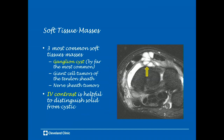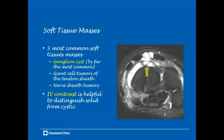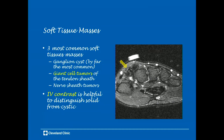Another common indication for wrist MRI is to identify and characterize soft tissue masses. The most common soft tissue masses in the wrist are ganglion cysts, and giant cell tumors and nerve sheath tumors. Ganglion cysts are by far the most common, with characteristic locations such as the dorsal wrist near the scapholunate interval, and are cyst-like with high signal. Giant cell tumors, on the other hand, tend to be low signal on all pulse sequences. IV contrast can be helpful to distinguish a solid from a cystic mass.